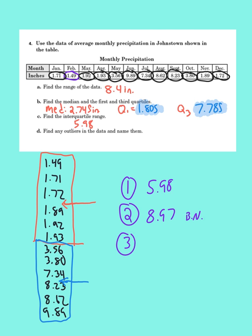Now in the third step, I'm going to set my boundaries. Remember to get my low boundary, I take Q1, which is 1.805, and I subtract 8.97, my boundary number. And I get negative 7.165. Now to get my upper boundary, I take Q3, which is 7.785, and I add my boundary number, 8.97. And that gets me 16.755. That's my upper boundary.